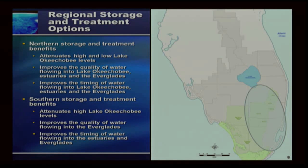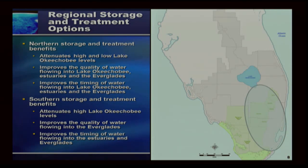South storage and treatment benefits: when we have very high lake levels we can move water off the lake and store it to the south, attenuating high Lake Okeechobee levels. Building additional south storage will require additional treatment to the south to improve water quality flowing into the Everglades. It also improves the timing of flow to the estuaries — if we can reduce the highs in Lake Okeechobee, that improves flows to both the estuaries and the Everglades.